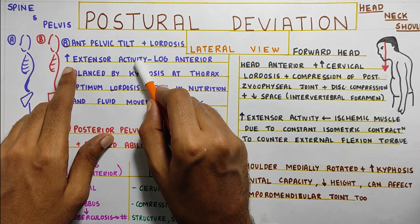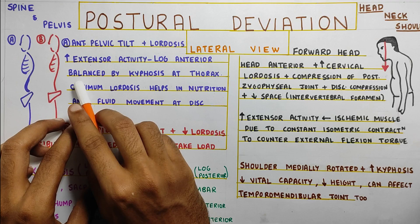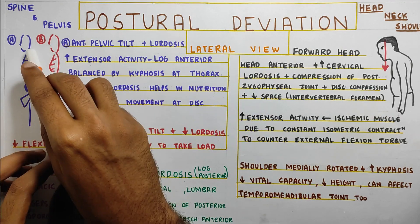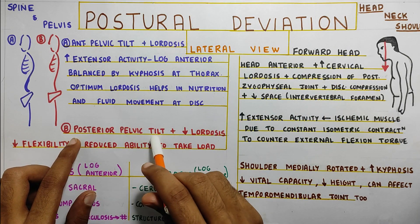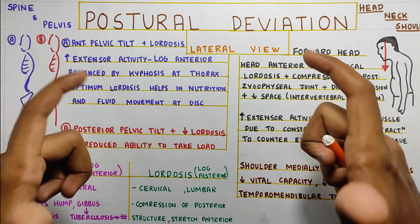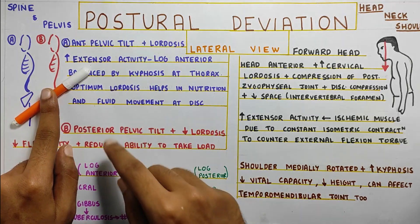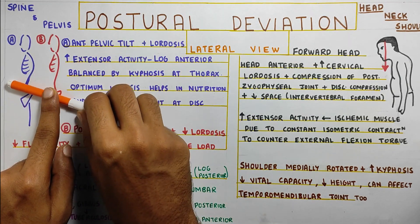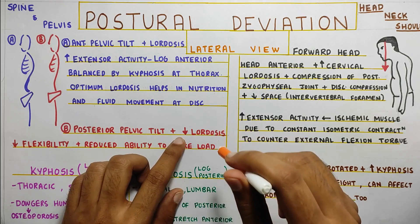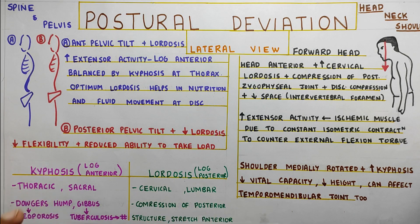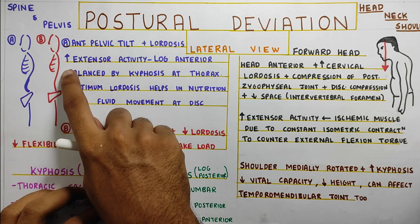Excessive lordosis will increase extensor activity at the low back. To keep the line of gravity anteriorly, this is balanced by the kyphosis seen at the thorax. The other scenario is posterior pelvic tilt, where your pelvis goes into a posterior tilt. In anterior tilt, lordosis increases. In posterior tilt, lordosis will be reduced. When there is reduction in lordosis at your lumbar spine, there is reduced flexibility and also reduced ability of your spine to take load. This is the second scenario that can be seen in patients with low back issues.